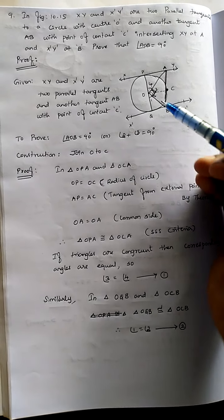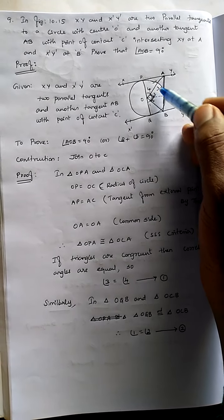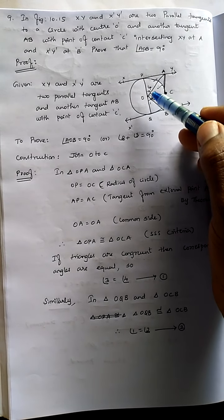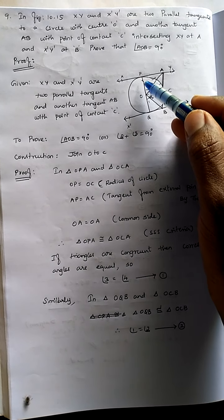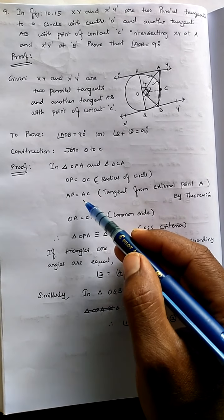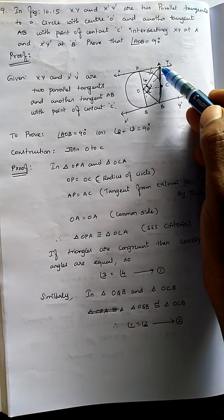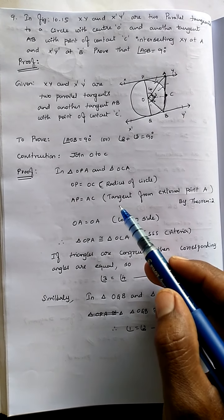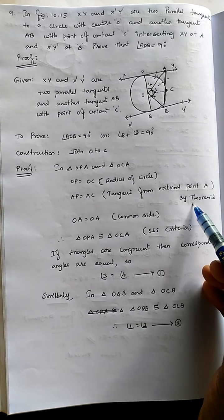After construction, let's take these two triangles. In triangle OPA and OCA, OC equals OA because they are radii of the circle. Next, AP equals AC because tangents from an external point are equal by theorem 2.